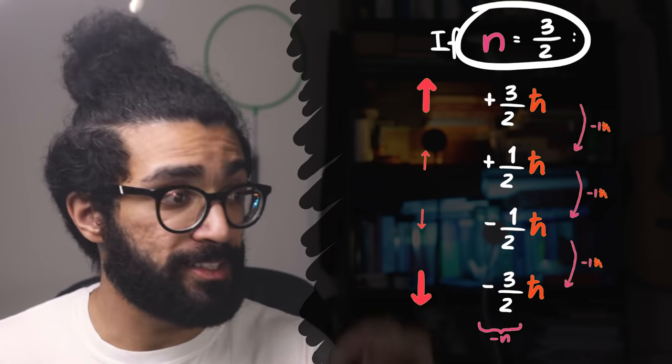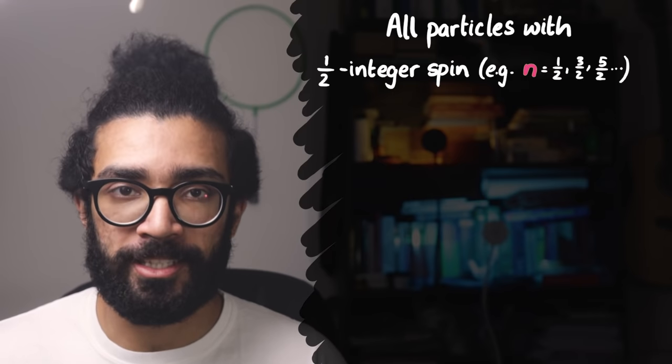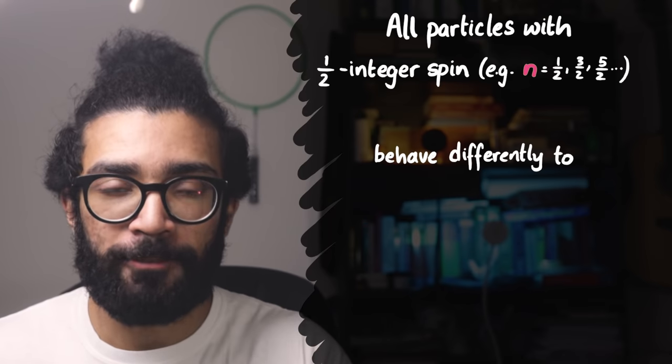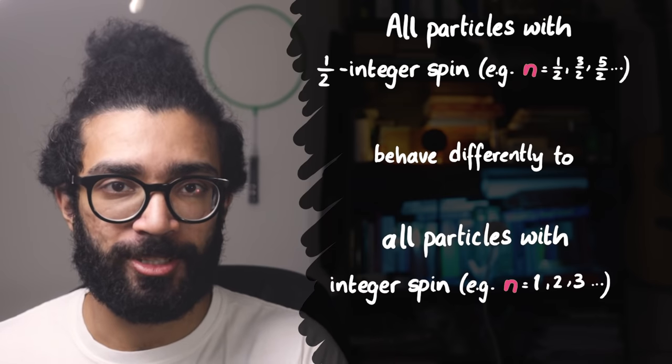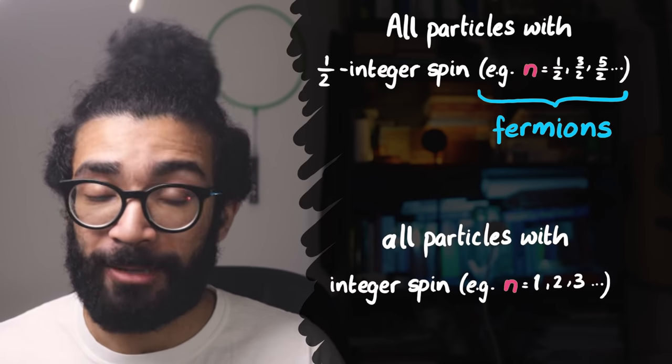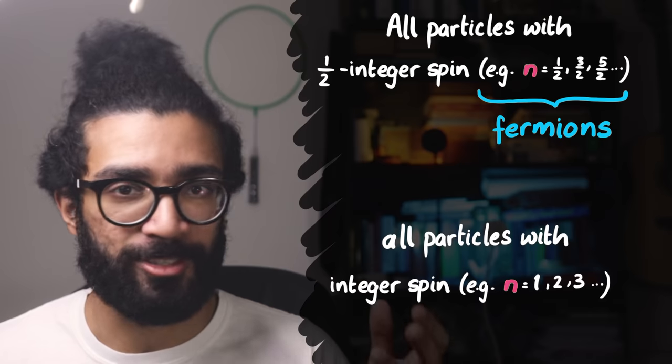But the coolest thing that I can mention here is that all particles with half integer spin display very different behaviours to all particles with integer spin. In fact, particles with half integer spin are known as fermions, and particles with integer spin are known as bosons.